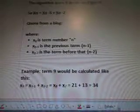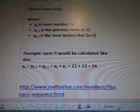Quote from the blog, X_N is term number N. X_(N minus 1) is the previous term, N minus 1. X_(N minus 2) is the term before that, N minus 2. Example term 9 would be calculated like this. X_9 equals X_(9 minus 1) plus X_(9 minus 2) equals X_8 plus X_7. 21 plus 13 equals 34.